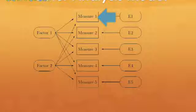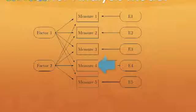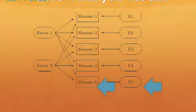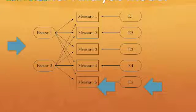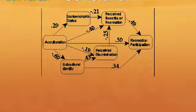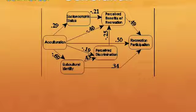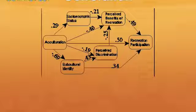The common factor model illustrates how this method works. In this model, observed responses are represented in measures 1 through 5, underlying unique factors are represented by E1 through E5, and the underlying common factors are represented by Factor 1 and Factor 2. The strength of the relationship between each factor and measure varies, indicating that some factors influence variables more than others. Measures that are highly correlated are likely influenced by the same factors, while those that are uncorrelated are likely influenced by different factors. If the factors were perfectly correlated there would be a score of 1, and if they were perfectly negatively correlated there would be a score of negative 1.